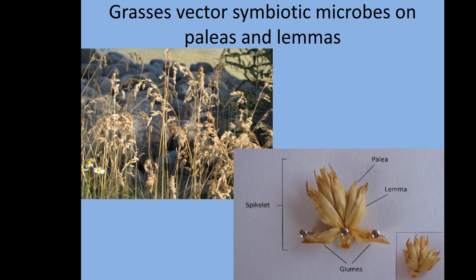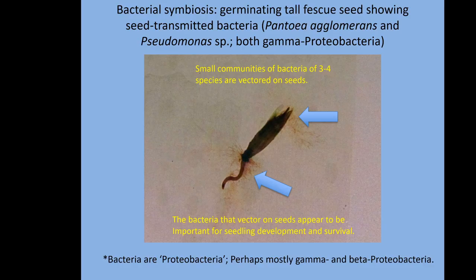A lot of these microbes are actually carried on or in the seed. Most seeds carry three, four, or five different species of microbes, and those microbes will function in the seedling. But the plant also takes microbes out of the soil — we call it recruiting, or another way to think of it is fishing: the plant fishes the microbes it likes from the soil. The image here is a tall fescue seed germinating — you can see the root, some hairs, and the shoot coming out.